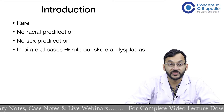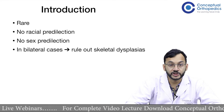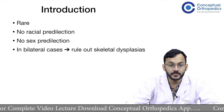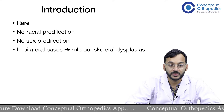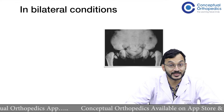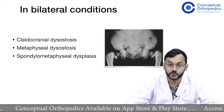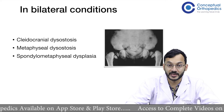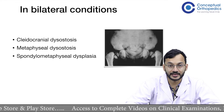Congenital coxa vera is a very rare condition. There are no racial or sex predilections. However, in bilateral cases, it is always important that we rule out skeletal dysplasias — specifically cleidocranial dysostosis, metaphyseal dysostosis, and spondylometaphyseal dysplasia. Other uncommon dysplasias can also be seen.